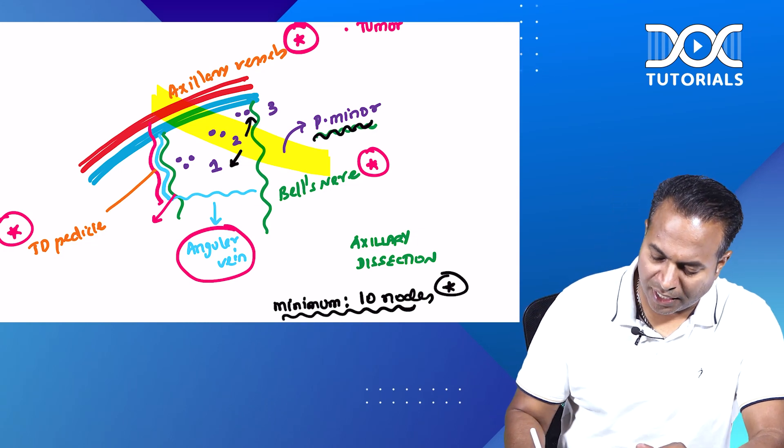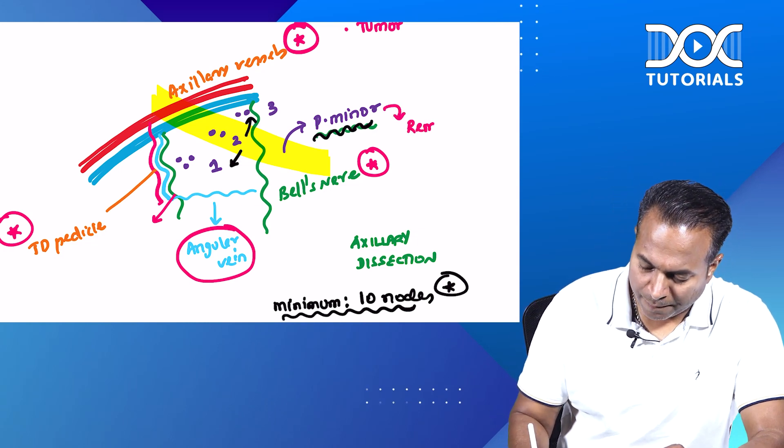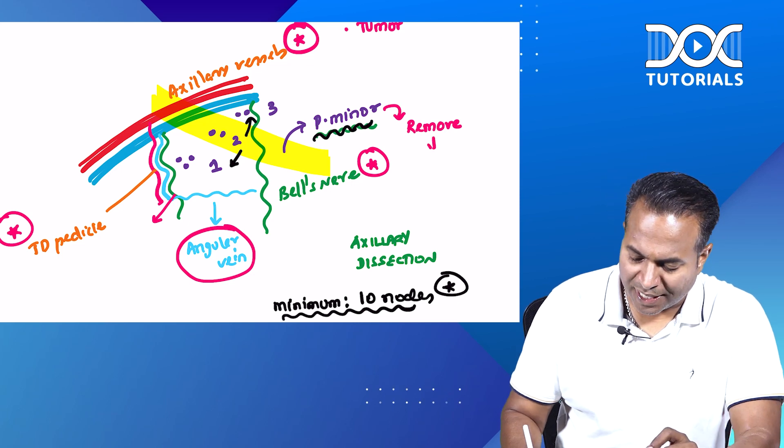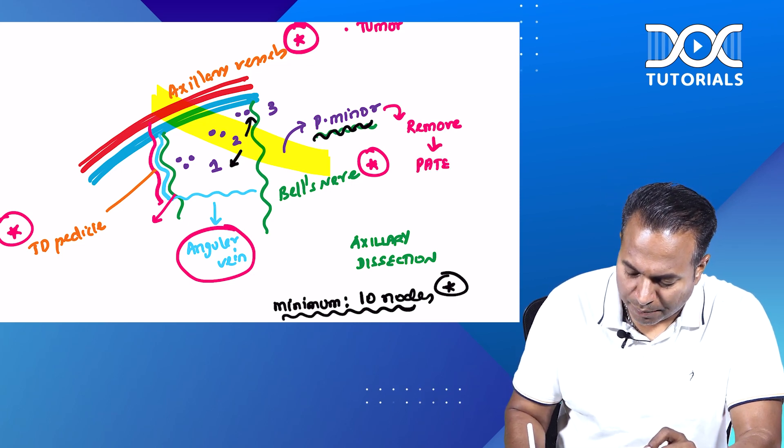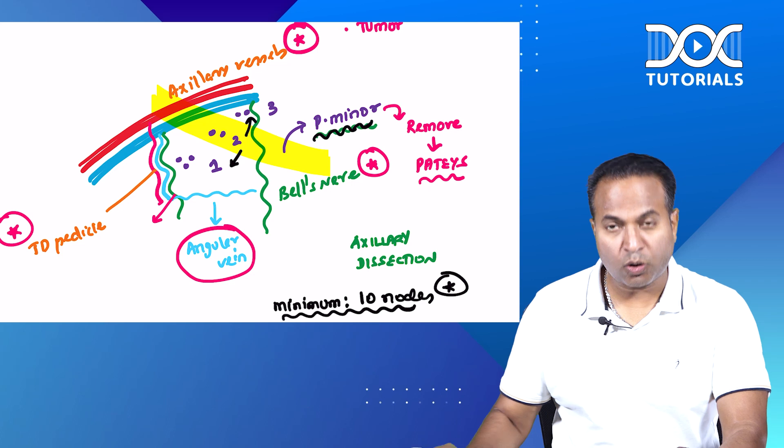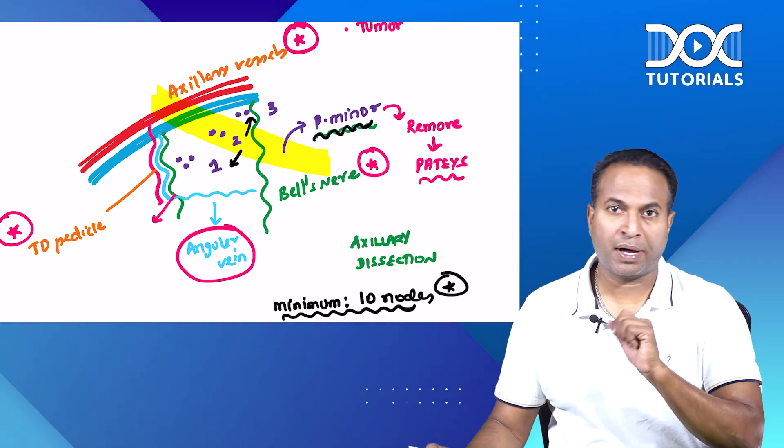And during this procedure, if I remove the pectoralis minor, that maneuver is known as Patties MRM. The removal of this pectoralis minor is known as Patties type of MRM.